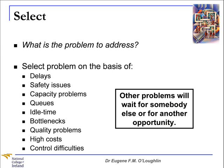Let's take a look at each of the six components of SREDM one by one. First off, you Select. You and your team should determine what the problem is to address. You select the problem on the basis of several criteria such as delays, safety issues, queues, bottlenecks and so on. It's important to remember that you select one problem at a time. Other problems will wait for somebody else or for another opportunity.